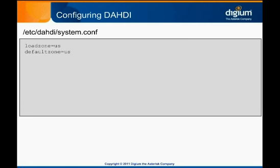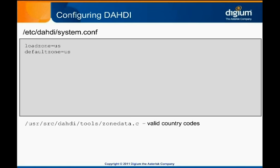If we strip out these comments, we can see that there are two options set by default. These are tone zones that describe the frequencies and durations of the tones to signal dial tone, busy, and other call indications. Each option can be set to a two-letter country code. A single default zone is required, but multiple load zone settings are permitted. Valid country codes can be found in the zonedata.c file in the tool subdirectory of the Dottie source.